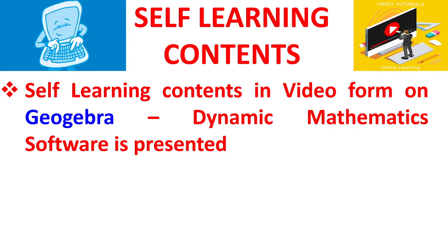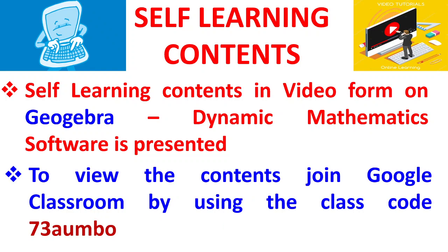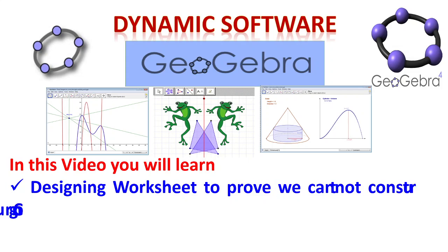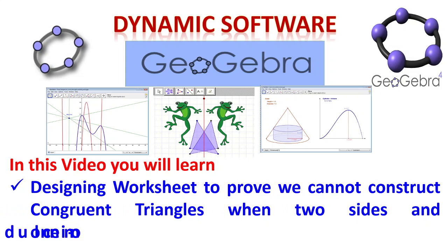To view the contents, you may join Google classroom by using the class code 73AUMBO. In this video you will learn designing a worksheet to prove we cannot construct congruent triangles when two sides and one non-included angle is given.